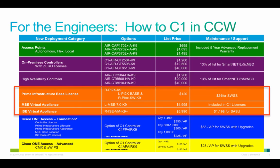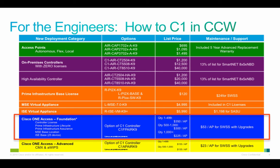This orange section — consider this a bit of a one-time setup cost. If you don't have Prime Infrastructure base you'll want to get that; if you don't have the MSE you'll need to get that; if you don't have the ISE virtual appliance you need to get that. All of the separate licenses are included in Cisco One and are actually a component of the controller. So when you add C1-AIR-CT5508-K9, as you can see in the purple section, one of the options is the Cisco One Access Foundation licenses — you simply add the number of APs and that automatically adds the licenses.